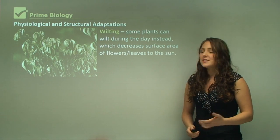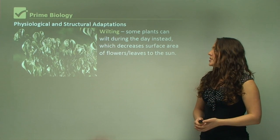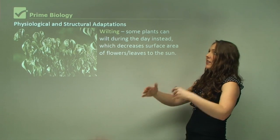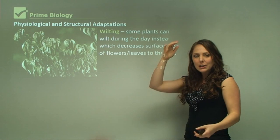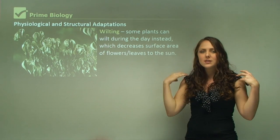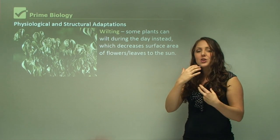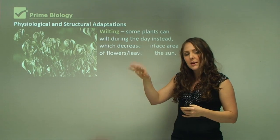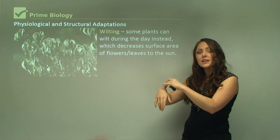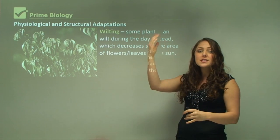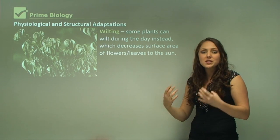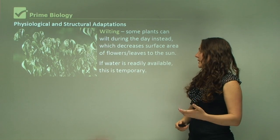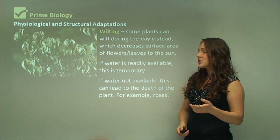Some plants can wilt during the day, which decreases the surface area of flowers and leaves exposed to the sun. If a leaf is spread out flat it absorbs more sun; if it wilts, the leaves drop and only a small amount is exposed to direct sunlight — this is a physiological response to reduce sun exposure and survive in hot environments. If water is readily available, this is temporary; if not, it can actually kill the plant.